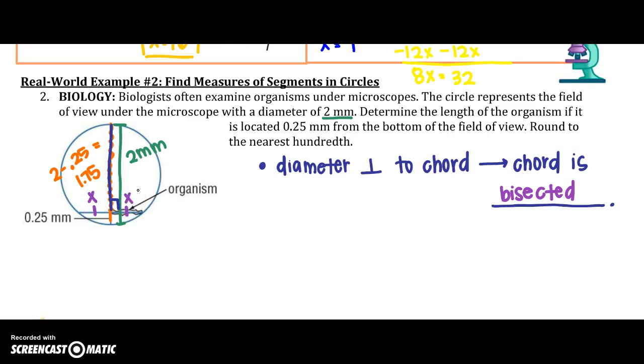So, I know that this portion and the organism are the same. So, I can actually represent those as both X, just because they're the same. And it gives me a variable. So, I'm going to say X times X equals 1.75, the top, times the bottom, 0.25.